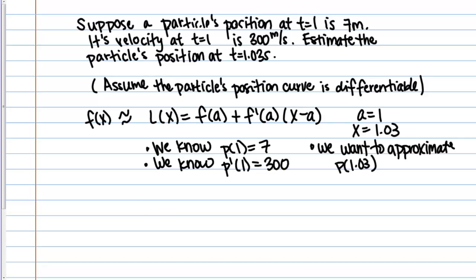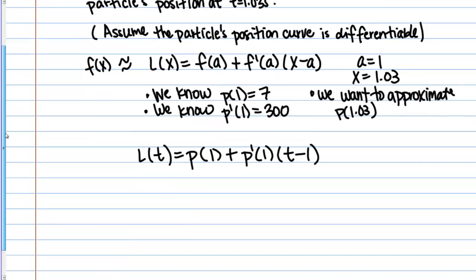So now that we know this, we can simply plug into our formula to complete the approximation. So let's see. Let's apply this notation, but to our specific variable. So here our variable is t, so we'll call this L of t. And our function is position. So I'm going to write this as p of 1 plus p prime of 1 times t minus 1. I've changed the variables a little bit just to account for the variables we're actually using.